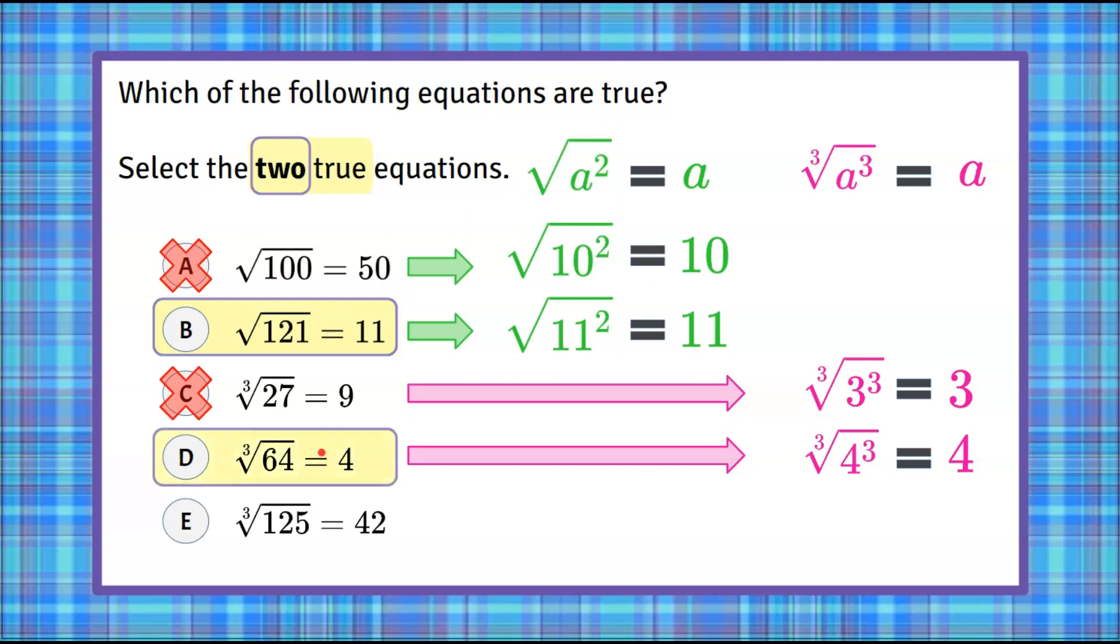We know we have our two equations, but let's check E just to make sure we didn't make a mistake. We have the cube root of 125. That's a perfect cube. We can rewrite that as 5 cubed. 5 times 5 is 25. 25 times 5 is 125. So the cube root of 125, also written as 5 cubed, is 5. This is not true. The cube root of 125 is not 42. So we have our two true equations, which are B and D.